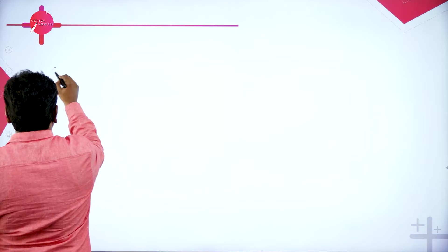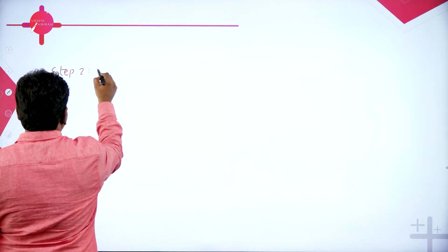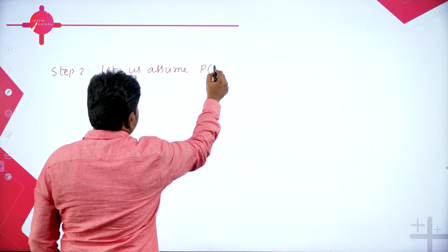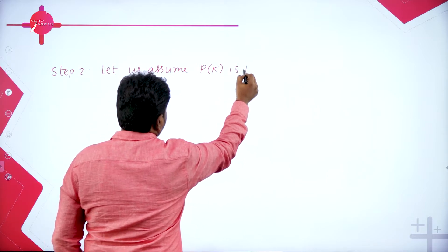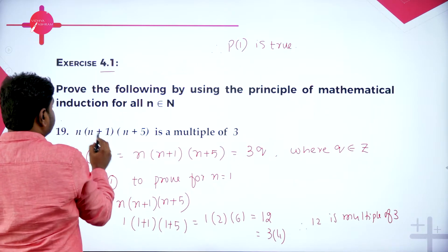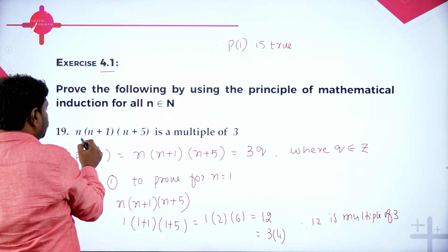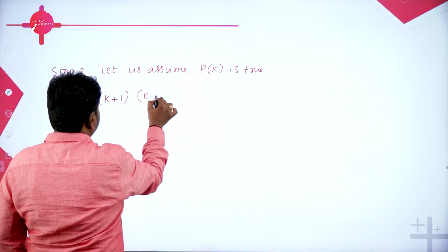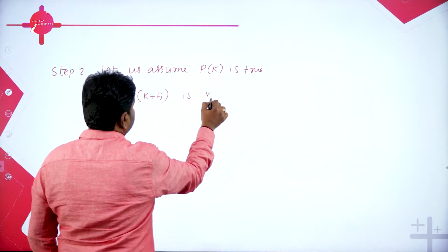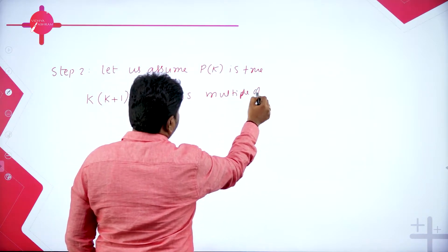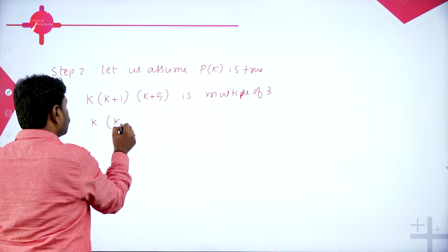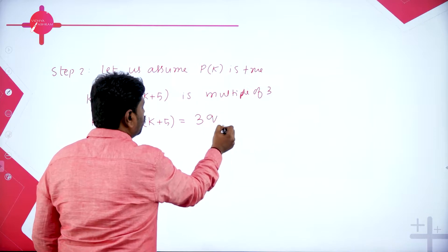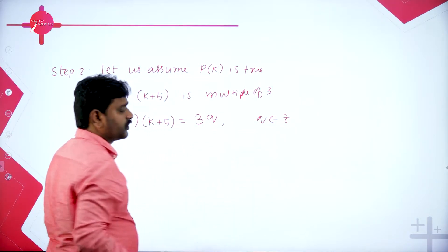Then we go to Step 2. Let us assume P(k) is true. That means: change n to k — so k(k+1)(k+5) is assumed to be a multiple of 3. That means k(k+1)(k+5) can be written as 3q, where q belongs to integers. This is our assumption — call it equation 1.